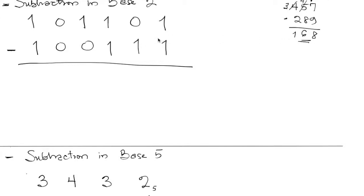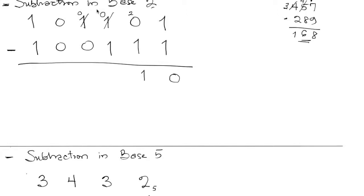The same thing applies in base 2. The only difference is that when we borrow 1 from the preceding column, we're not carrying 10 — we're carrying 2, because we're working in base 2. Now in this sum: 1 minus 1 is 0, no issues. 0 minus 1 is not possible, so we borrow 1 — making the preceding digit 0 — and when we bring that 1 here, we're actually bringing 2. So 2 minus 1 is 1. Similarly, 0 minus 1 is not possible, so borrow again; we bring 2, and 2 minus 1 is 1. Then 0 minus 0, 0 minus 0, and 1 minus 1 — no issues.